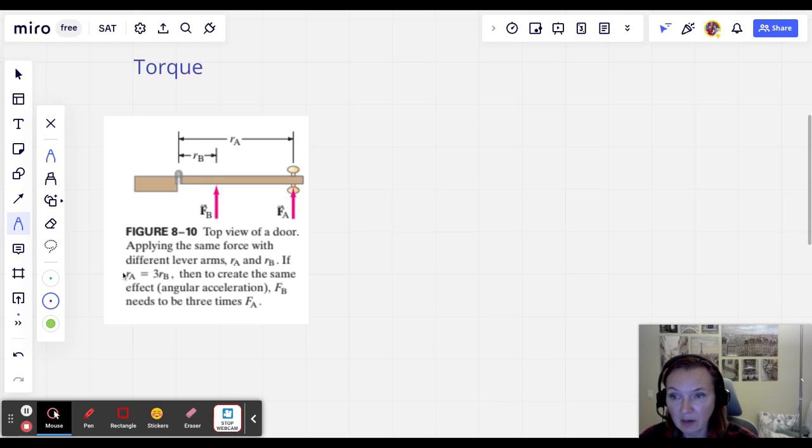Which means that if I have R_A which is three R_B, right, so this distance is three times as long as this one, that means that our force F_B has to be three times as large as this force F_A. That's why we feel that if you push the door at the edge we need to push it lightly, but if you push it by the hinge closer to the axis of rotation you have to apply a lot of force there. So that means that the angular acceleration is proportional to the force.